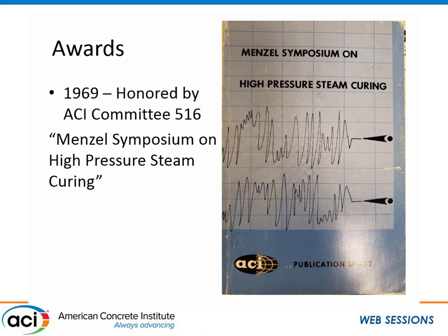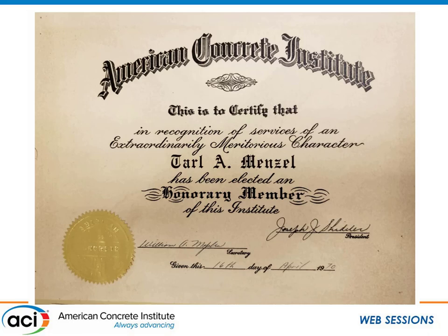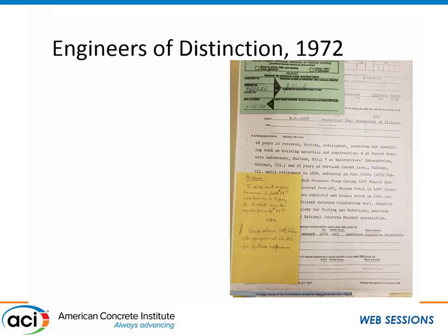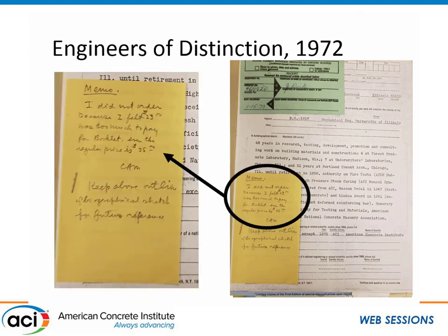In 1969, after he had retired from the Portland Cement Association, he was honored by ACI Committee 516 with a symposium on high-pressure steam curing, another area he worked in. He was also made an honorary member of ACI in 1970, and nominated as an Engineer of Distinction in 1972. He noted in his handwriting — on the document listing all the Engineers of Distinction — that he had wanted to get a copy but they told him he'd have to buy it for $23, and he wrote that was too much money.